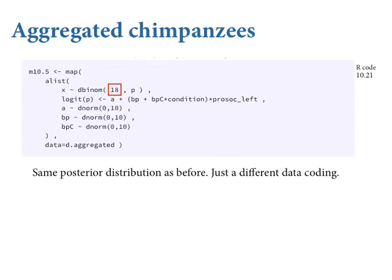By aggregating, you assume no effect of order in terms of how the data were collected. If you had a data set where you expected learning over trials — for instance, if the chimpanzees might learn that no matter how much food is there, they're not going to get it — then you might not want to aggregate. If order matters and individual trials vary conditionally on something you know, you need to keep it unaggregated.